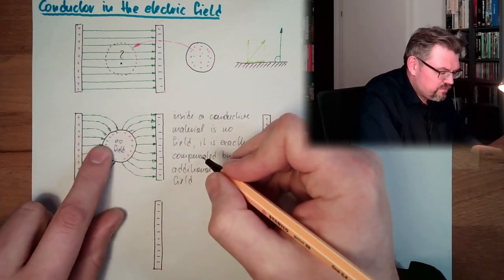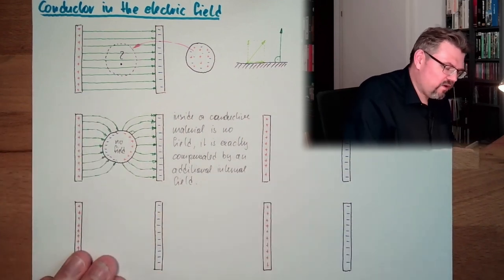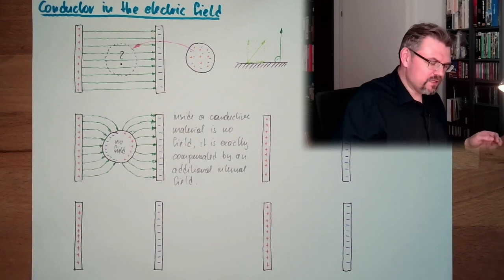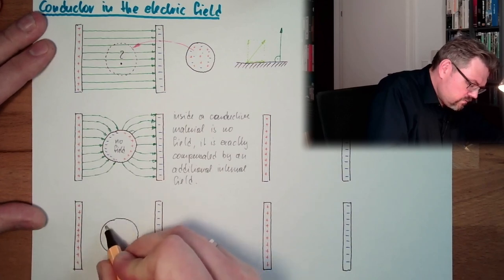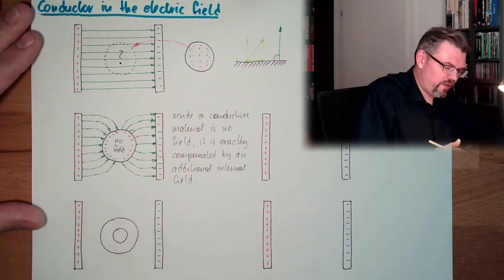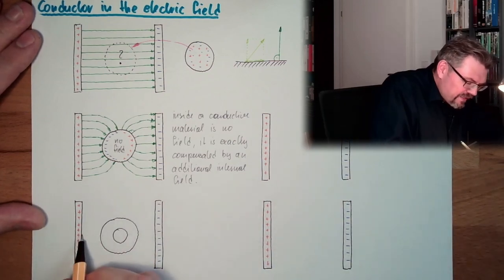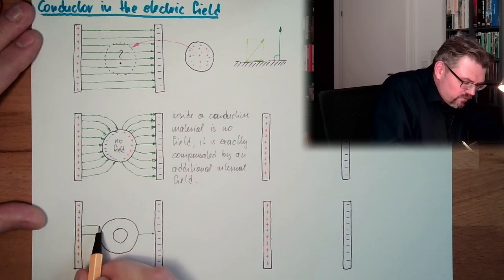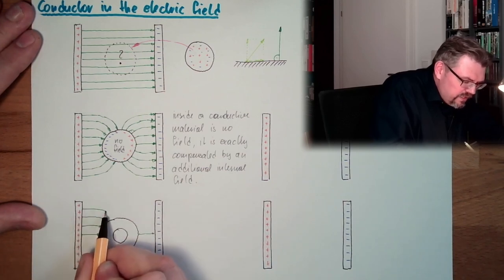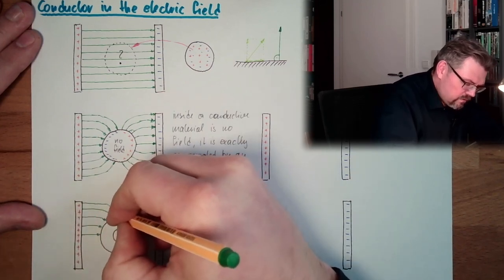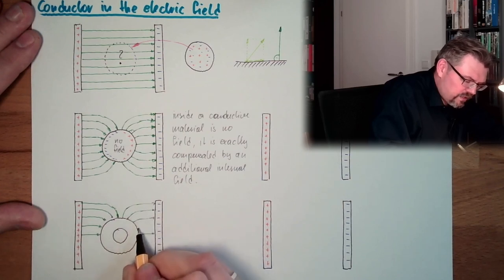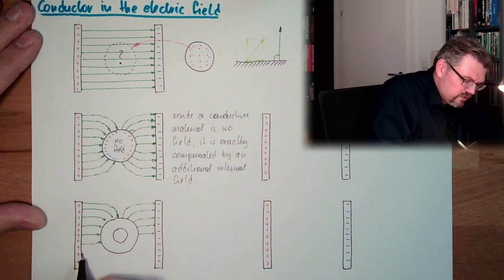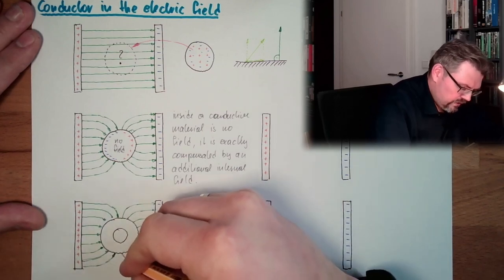Of course, there is an internal field — because here is a plus side and here is a minus side — but this internal field exactly compensates the outer field, so we have nothing net. What about if we use a hollow conductor — one with a hole in the middle? From the outer point of view, it looks exactly the same. We enter at 90 degrees, we exit at 90 degrees, the field lines are deformed. From the outside, we cannot detect this hole in the middle at all.